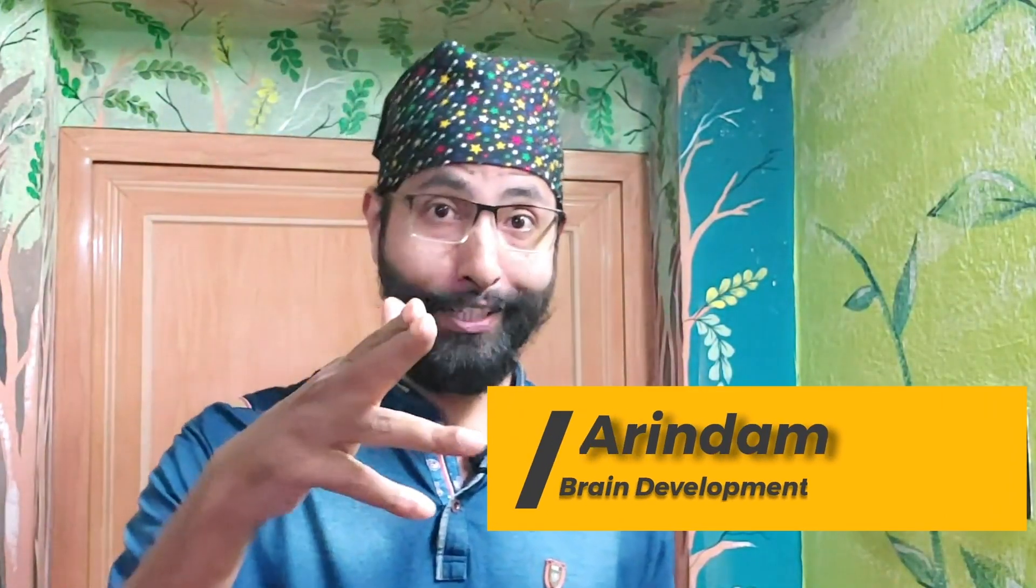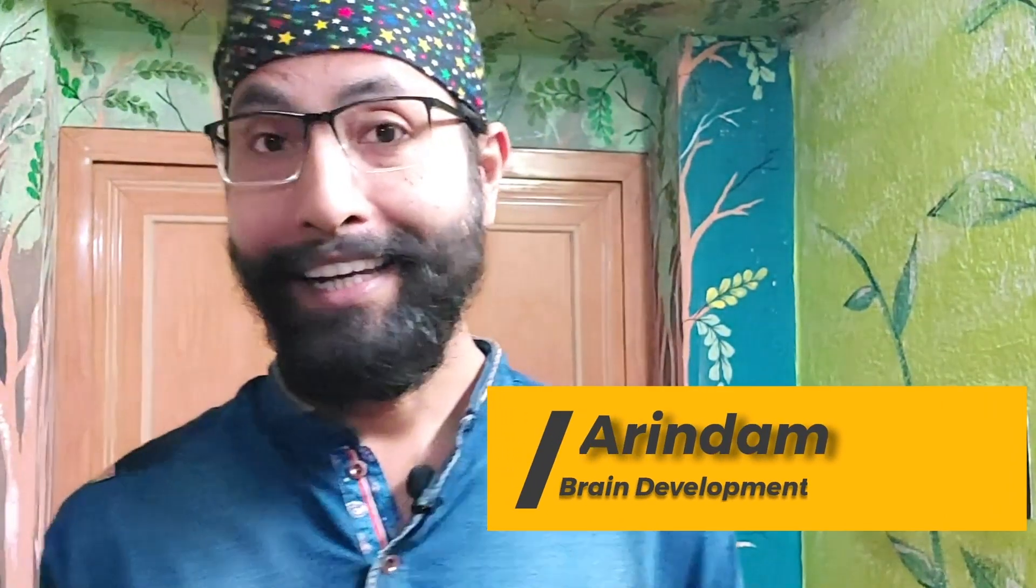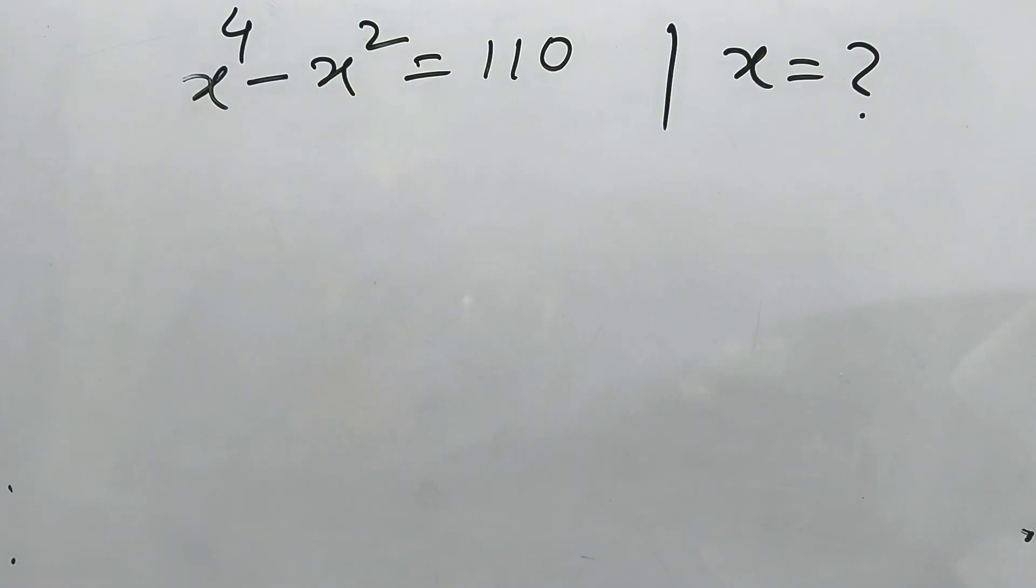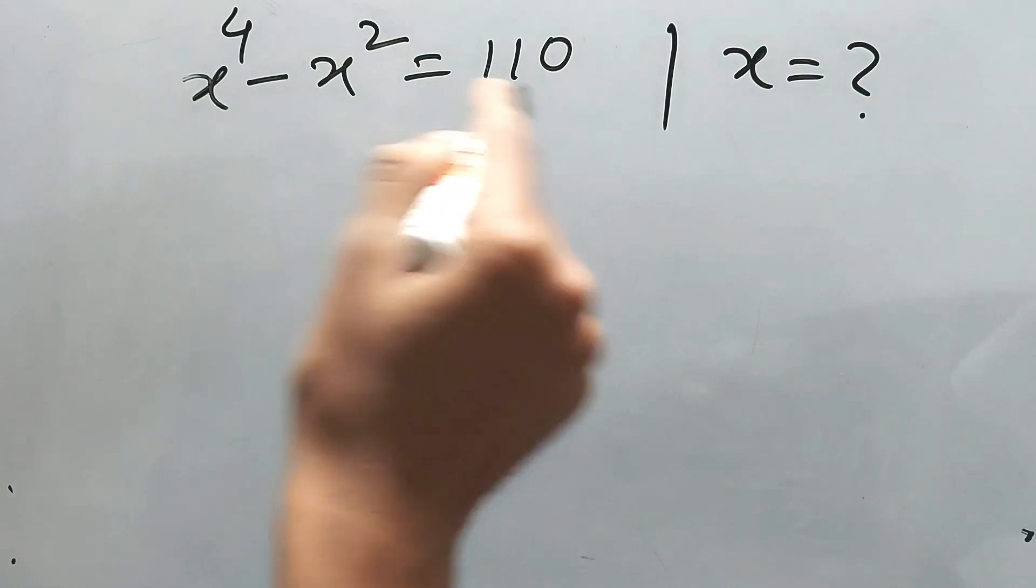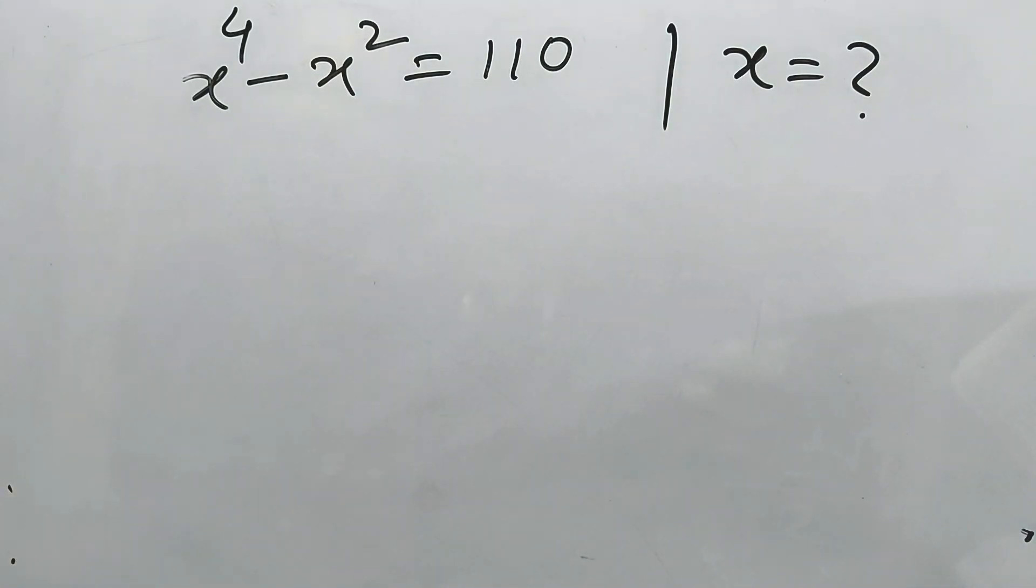Hi guys, this is Anindam. You're watching Brain Development. Let's focus on mastering the approach. So x to the power 4 minus x squared is equal to 110. What is the value of x?